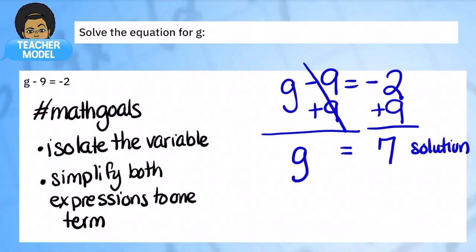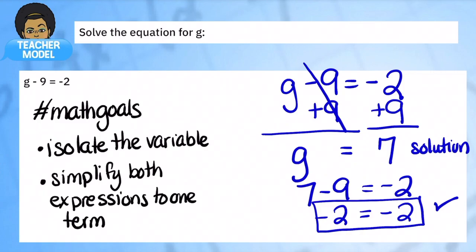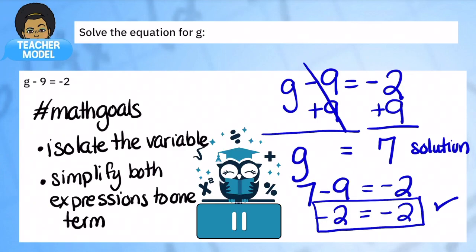We're going to actually check this and just validate and make sure this is true. So I'm going to take the 7 and I'm going to put it back in for g into our original expression. g minus 9 equals negative 2. I'm going to take away the g and I'm going to substitute and put in the 7. Now I can combine these terms. 7 minus 9 is negative 2. And negative 2 is equal to negative 2. So this satisfies our equation. It's a valid solution. It is completely balanced. Hit pause so you can jot this down into your notes.